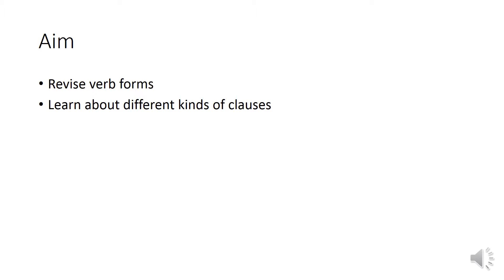In this lesson, we'll be looking at different verb forms — that will be a revision from Syntax 1 — and we'll learn about different kinds of clauses. In the last lesson, we talked about functions and realizations, and we said phrases are realizations which have a particular function in a clause. What we didn't talk about was that certain parts of a sentence are realized by clauses, and how we can label these clauses. That's what we're going to look at today.